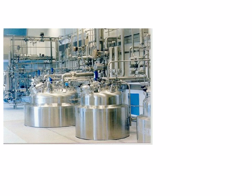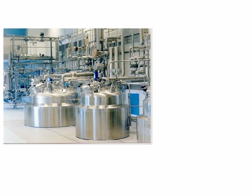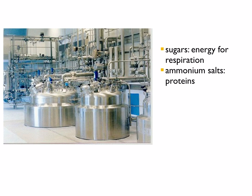The fermenter is made of stainless steel. It is sterilized before being filled with a mixture containing the required nutrients. These nutrients include sugars and ammonium salts, and then the fungus penicillium is added. The fungus grows well in the conditions inside the fermenter. The sugars provide energy for respiration, and ammonium salts are used by the fungus to make proteins. After a few days, the fungus starts to produce penicillin, which accumulates in the fermenter.